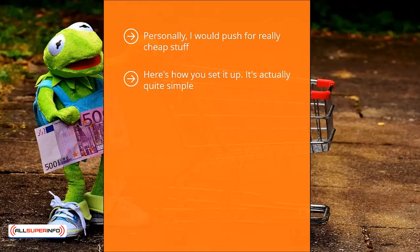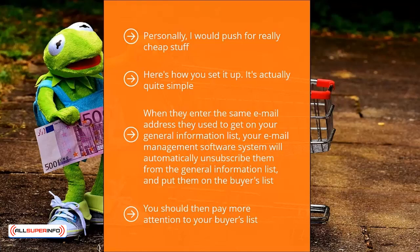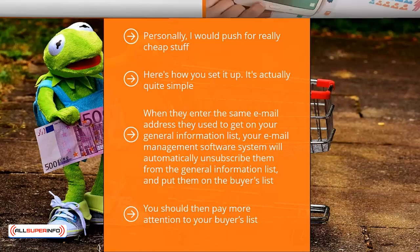Here's how you set it up — it's actually quite simple. When you send updates to your general information list, these updates contain a link to your sales pitch. When people click that link, they see a purchase button. When they purchase, they are taken first to an email signup page. When they enter the same email address they used to join your general information list, your email management software will automatically unsubscribe them from the general information list and put them on the buyer's list. This way, your tried and proven buyers will not see general list updates. You should then pay more attention to your buyer's list — send them more in-depth solutions or higher quality information to get them to buy higher priced products or services.